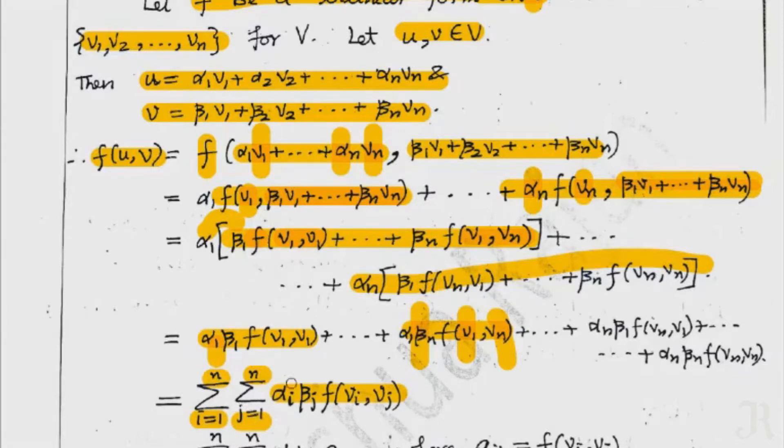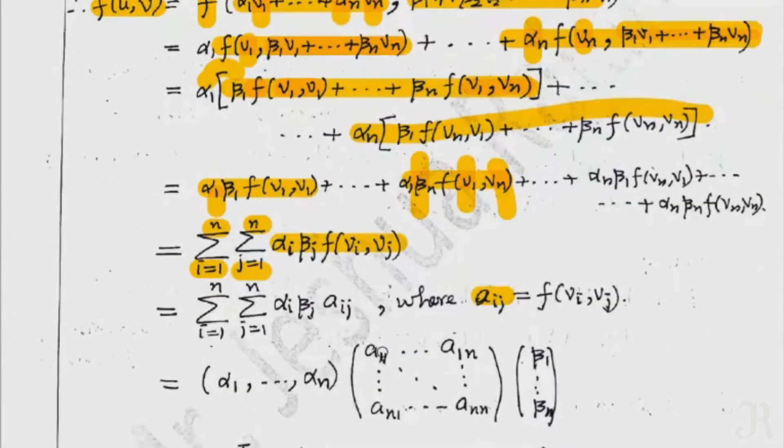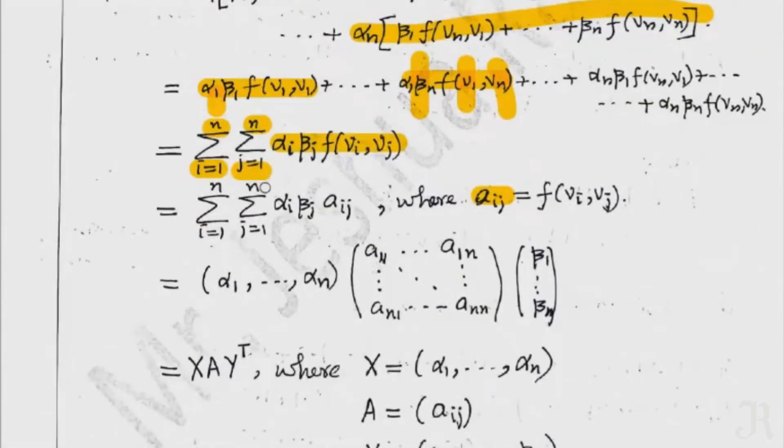Using the bilinearity, F(u,v) reduces to a double summation: sum over i equal to 1 to n and j equal to 1 to n of alpha_i times beta_j times F(v_i, v_j). For simplicity, we denote F(v_i, v_j) as alpha_ij — these are the entries of the matrix of the bilinear form.